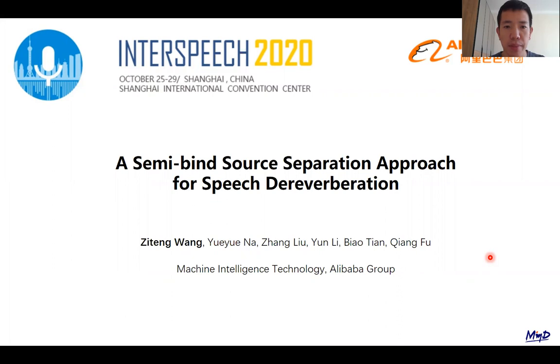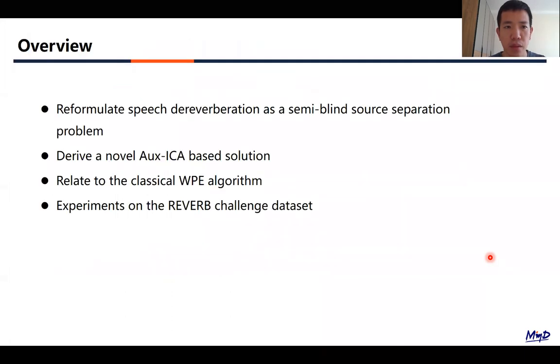Our paper is A Semi-Blind Source Separation Approach for Speech Dereverberation. In our work, we reformulate speech dereverberation as a semi-blind source separation problem. Correspondingly, we derive a novel Aux-ICA-based solution. We analyzed its relation to the classical WPE algorithm and conducted experiments on the Reverb Challenge dataset, proving the efficacy of our proposed approach.